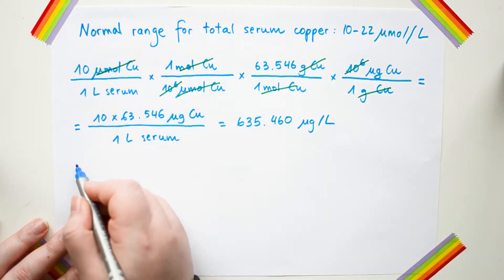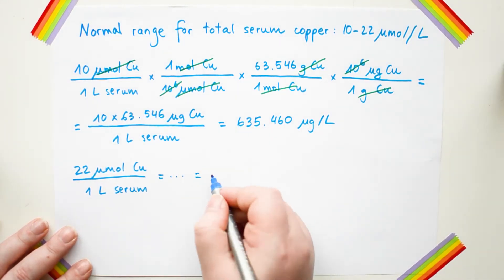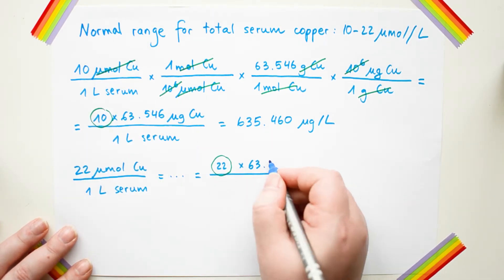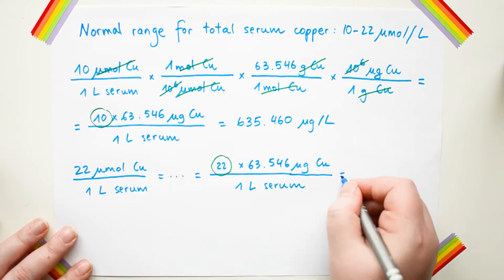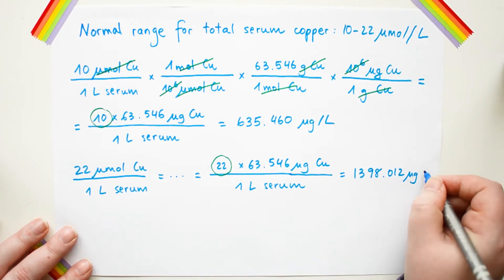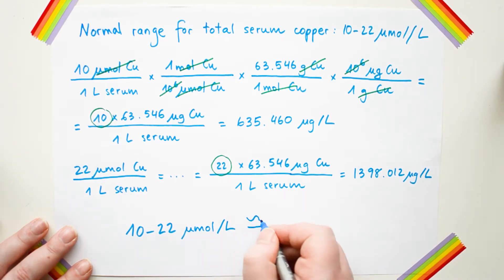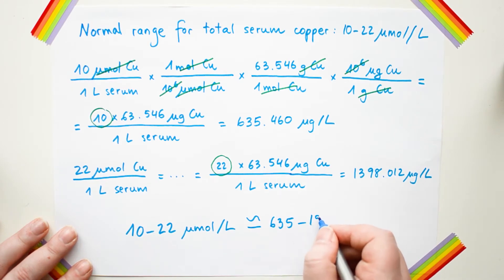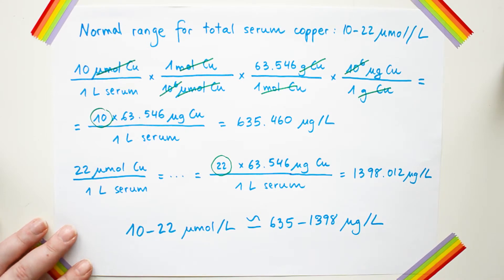If we do similar math with the upper end of the normal range, we find out that 22 micromoles of copper per liter of serum is 1398.012 micrograms per liter. So when it comes to copper, 10 to 22 micromoles per liter is roughly the same as 635 to 1398 micrograms per liter.